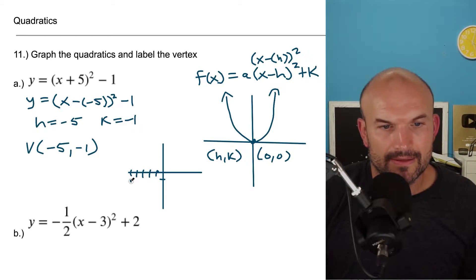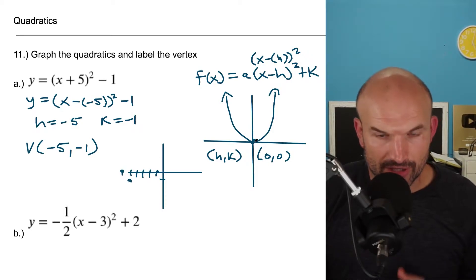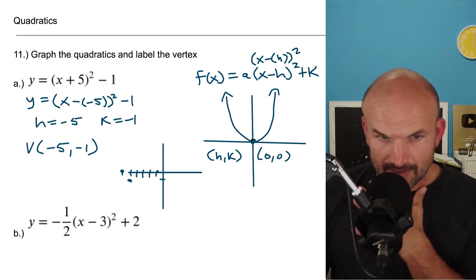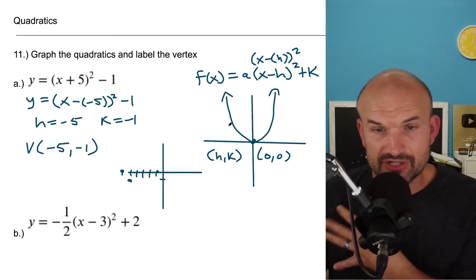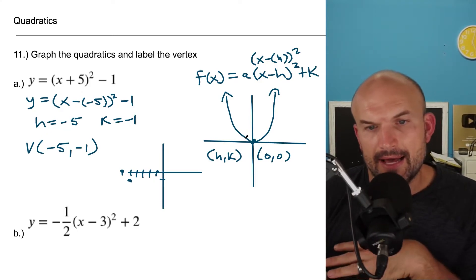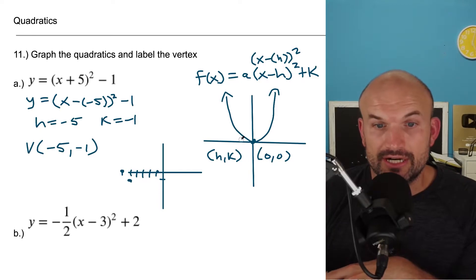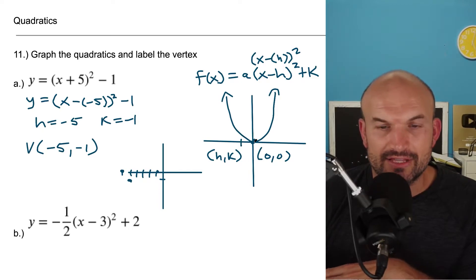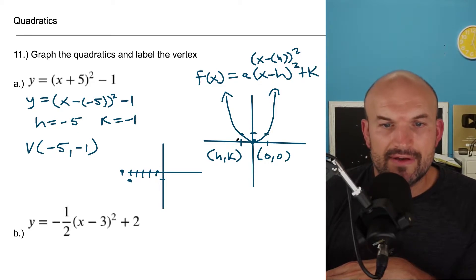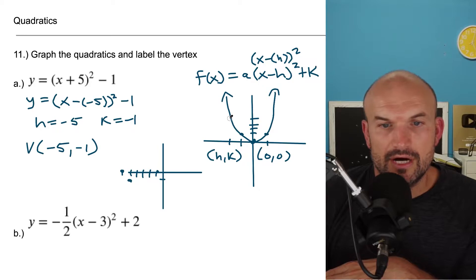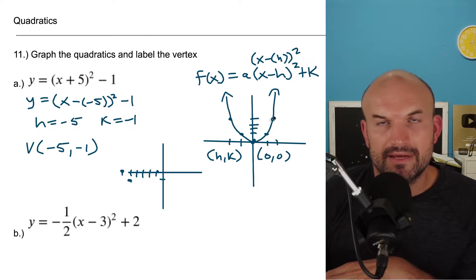And then one unit down. Now it's important to understand about quadratics — if your teacher wants you to get really dialed in on your graphing — the graphs go up one over one. So you have this point up one over one, and then you go up two, up four. So one, two, three, four — up two, up four, up two, up four.